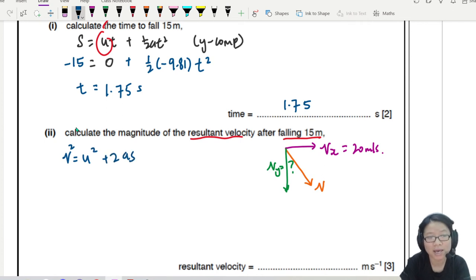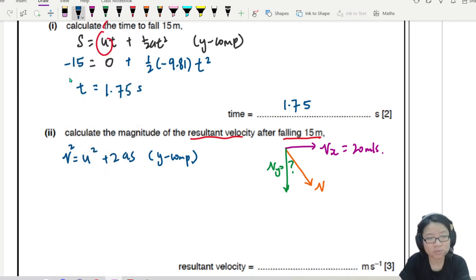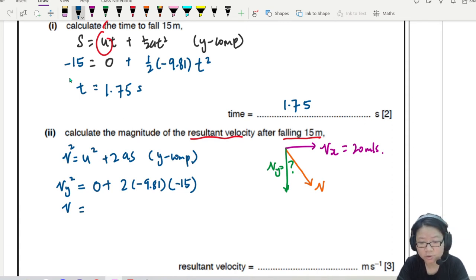I use the equation V squared is U squared plus 2AS. This is for the Y component. Announce your component for your own brain. So your VY is what you want to find. Your U was zero, remember? Horizontal velocity. 2, negative 9.81. And then you will fall through a distance of 15 meters, negative 15. So from here, you can find your V. 2 times 9.81 times 15. Negative and negative cancel off. So we square root this and you will get 17.15. I guess I will put 17.2 or just 17 meters per second.